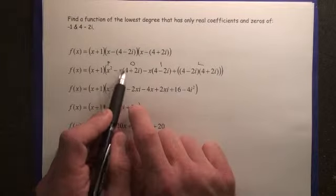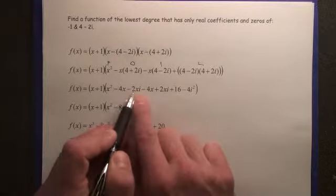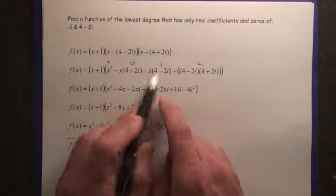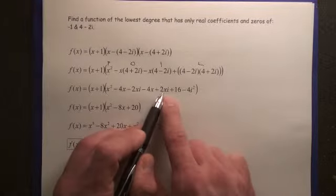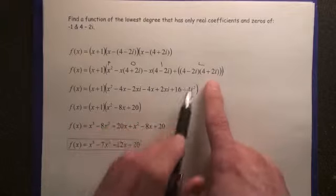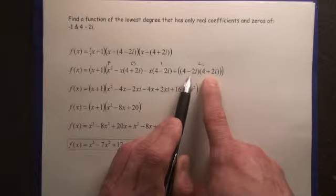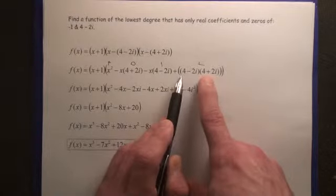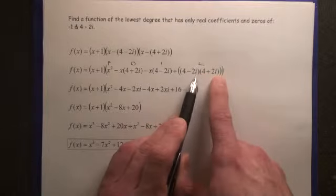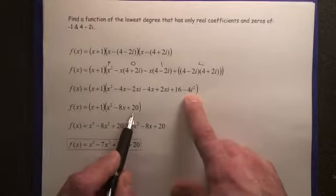So we're going to distribute the x, negative 4x minus 2xi. Distribute the x here, negative 4x plus 2xi. Then the last term, look at this. This is obviously, the middle term is going to cancel out. So therefore, we only do 16 minus 4i squared, which is eventually going to give us a 20.